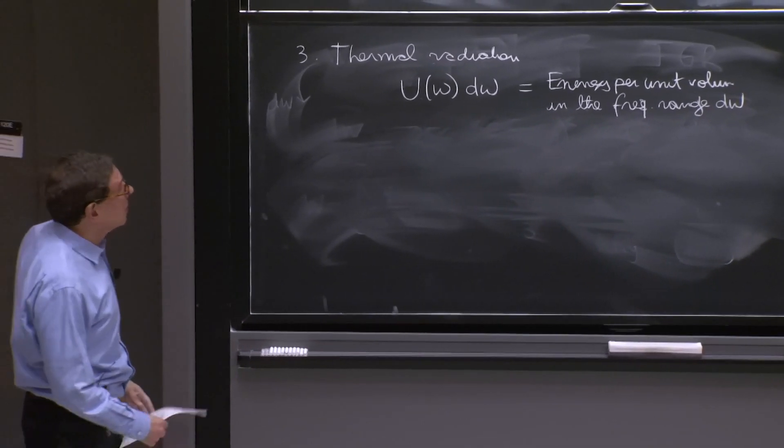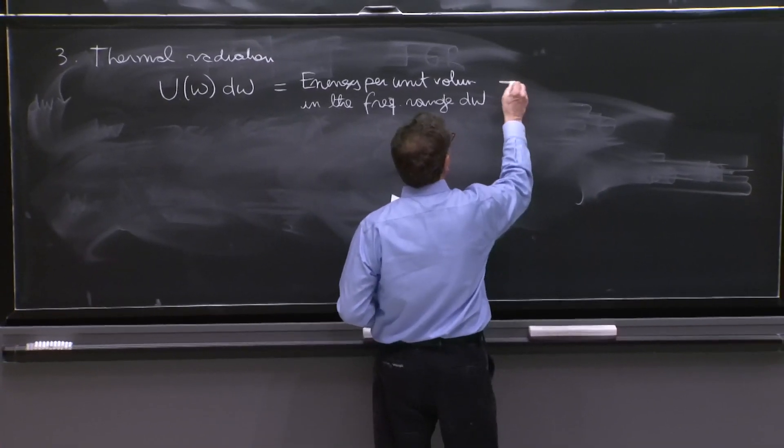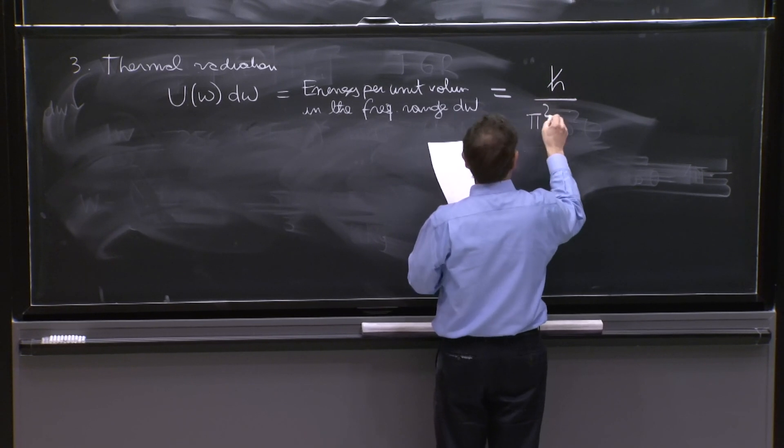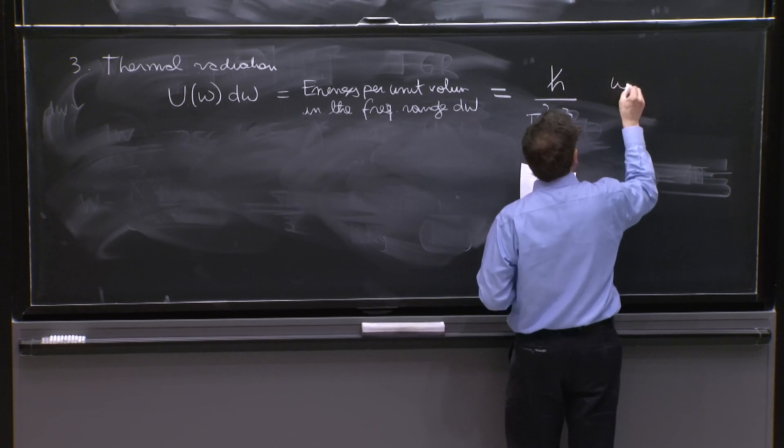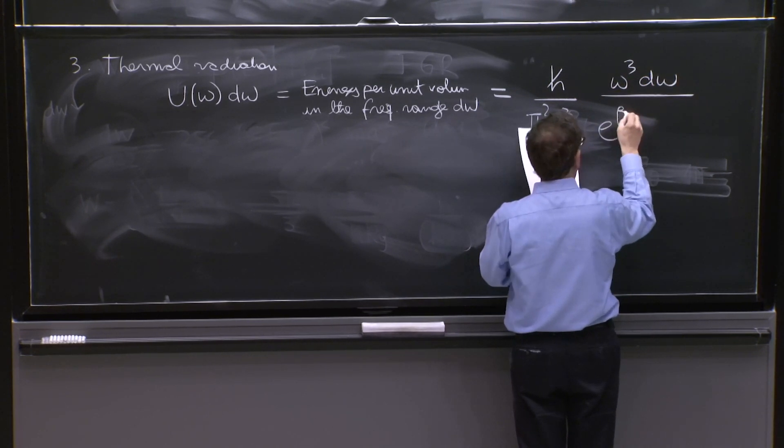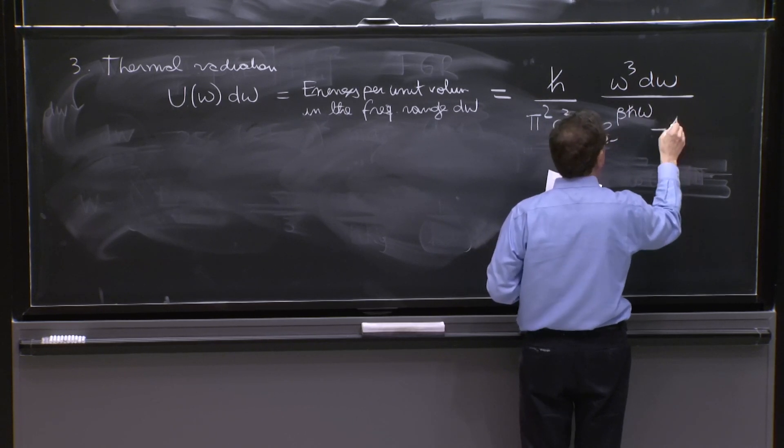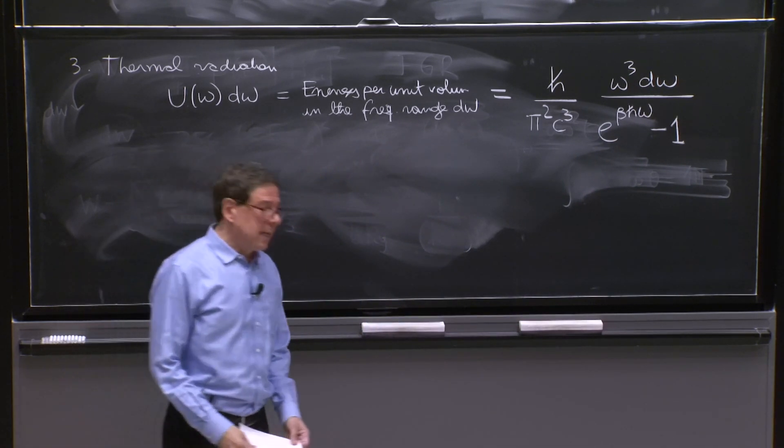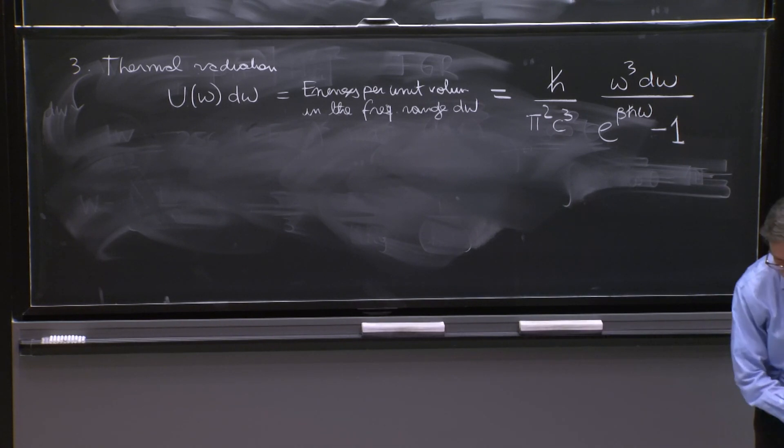So this has a formula, and the formula that was known to people was this quantities and then an ω cubed dω over e to the beta h bar ω minus 1. So this is the basis of the calculation.